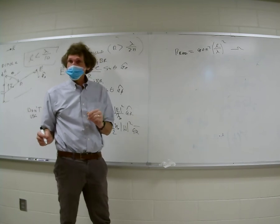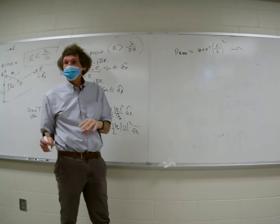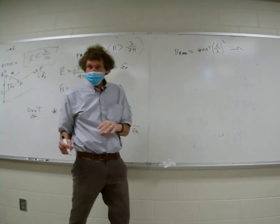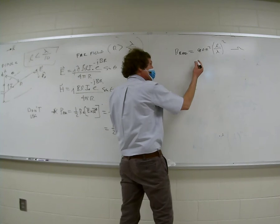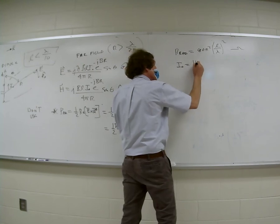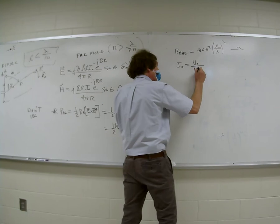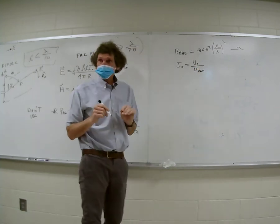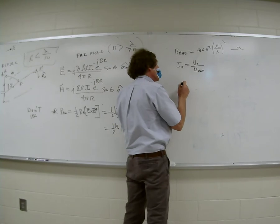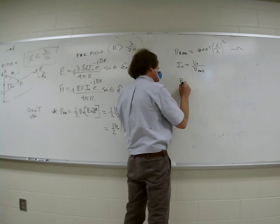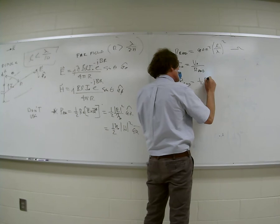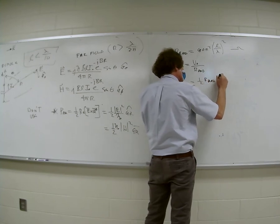That radiation resistance is small — we calculated maximum values on the order of a couple of ohms when the antenna is only a tenth of a wavelength or less. If we have that, then we can get the actual value of I₀. I₀ would be the voltage magnitude V₀, whatever is driving it, divided by R_radiation. From that we could get the total power radiated.